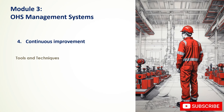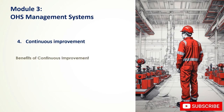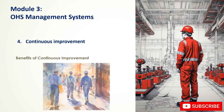Tools supporting continuous improvement include Kaizen — a Japanese philosophy of continuous small incremental changes; Six Sigma — a data-driven approach to reducing defects; Lean — eliminating waste and improving efficiency; and FMEA — a proactive approach to identifying potential failures. Benefits include enhanced OHS performance, increased employee engagement, cost reduction, improved organizational efficiency, and a stronger safety culture.